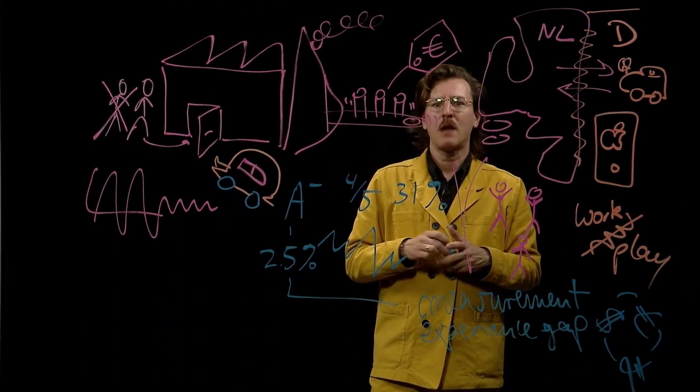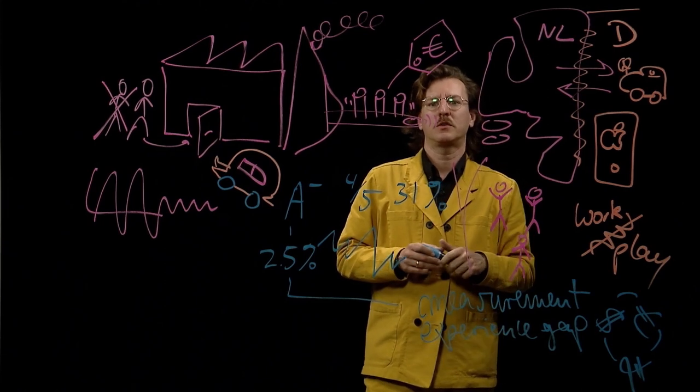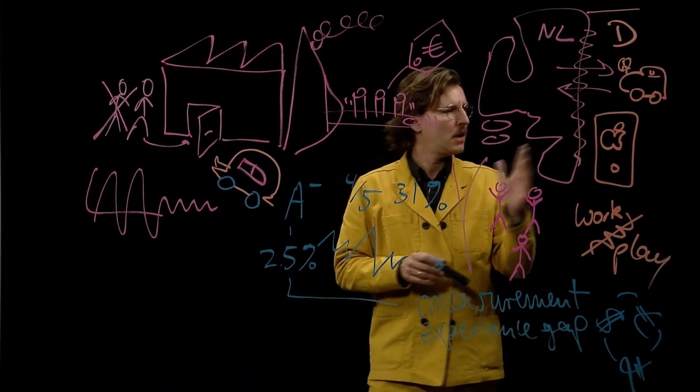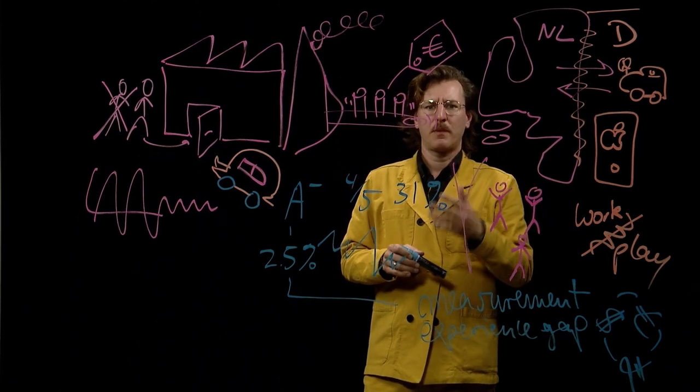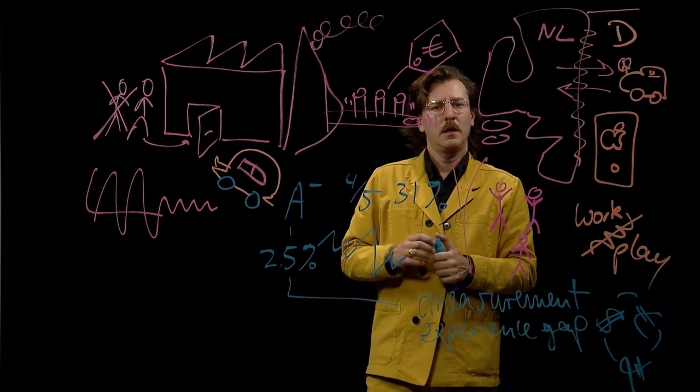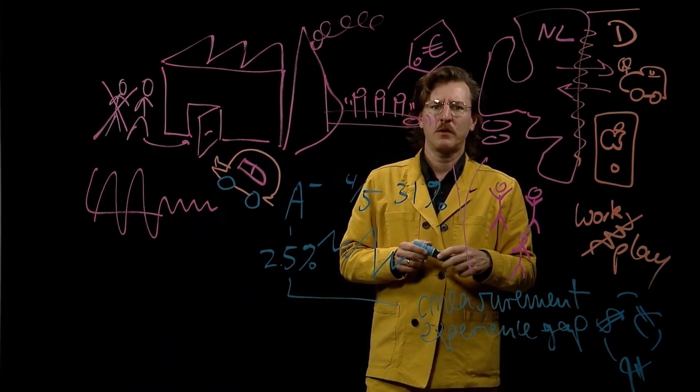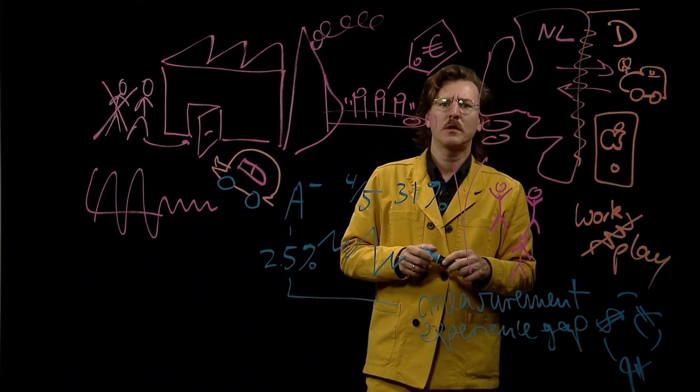But this blurriness doesn't rhyme well with statistics, because statistics need bright-line definitions. What is production and what is not? Was something made in Germany or in the Netherlands? This mismatch between the blurry economy and bright-line statistical standards takes its toll on the quality of data.